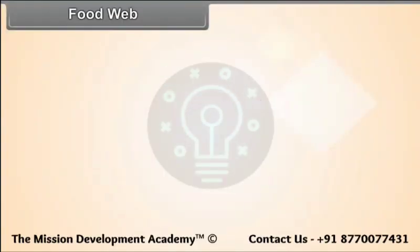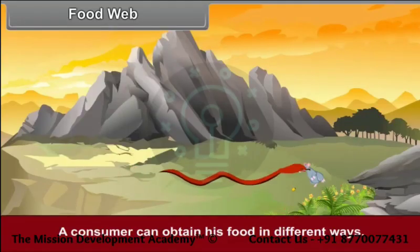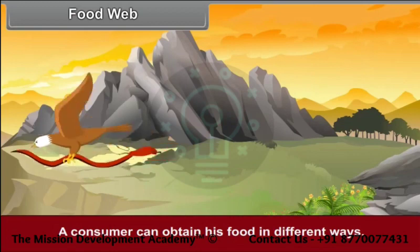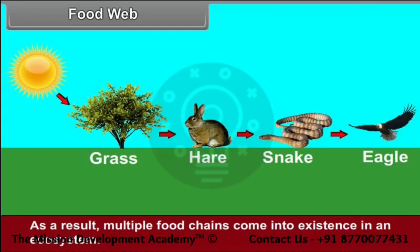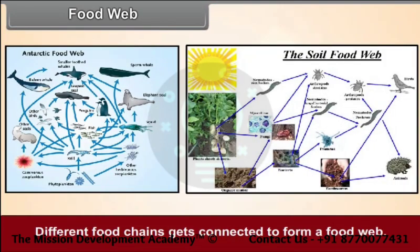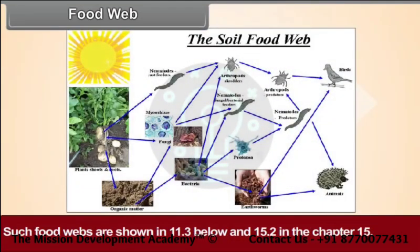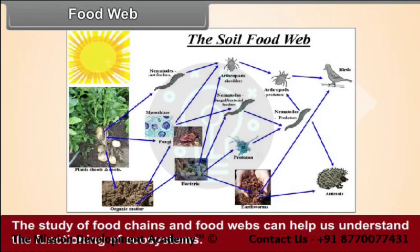Food Web: A consumer can obtain food in different ways. As a result, multiple food chains come into existence in an ecosystem. Different food chains get connected to form a food web. The study of food chains and food webs can help us understand the functioning of ecosystems.